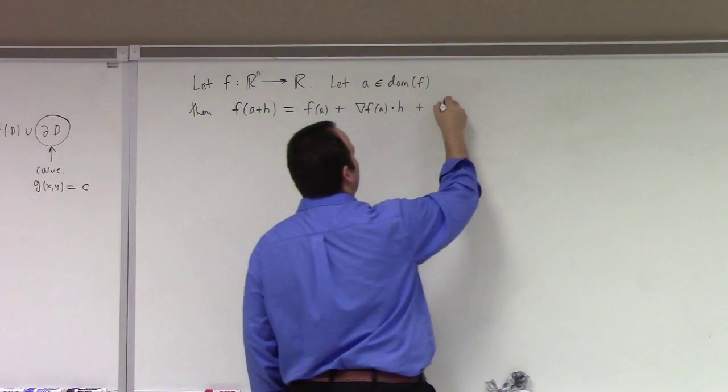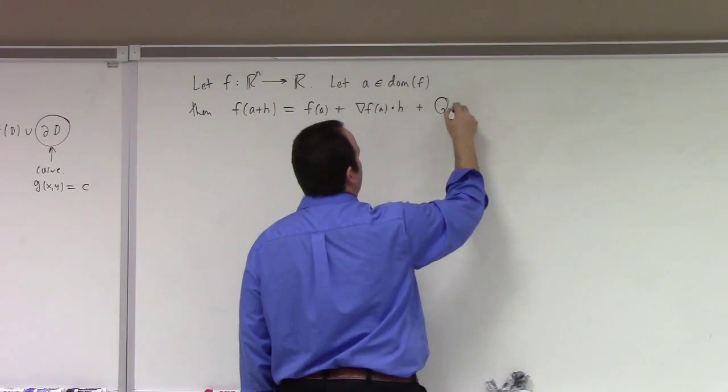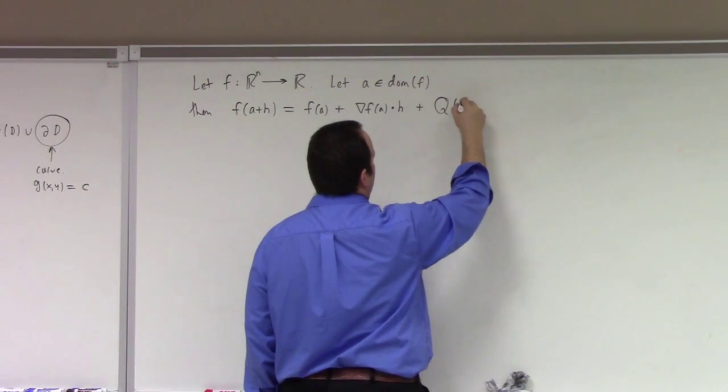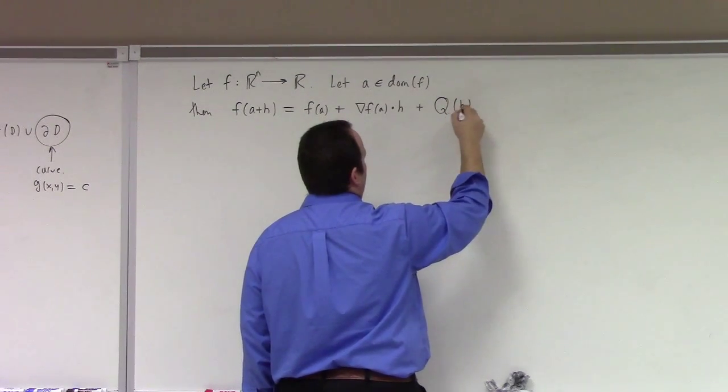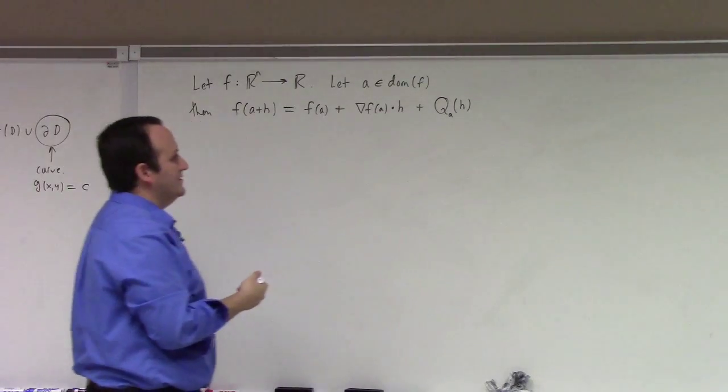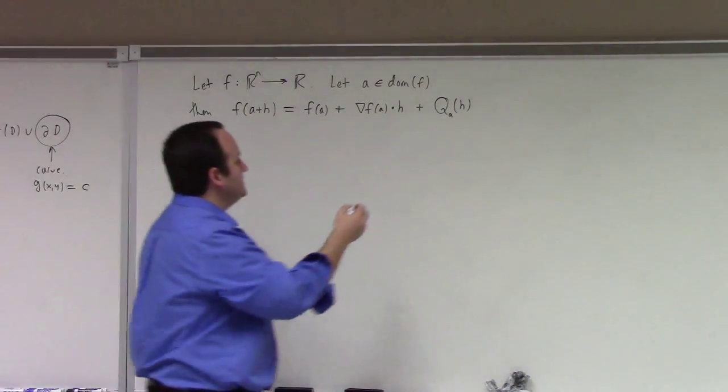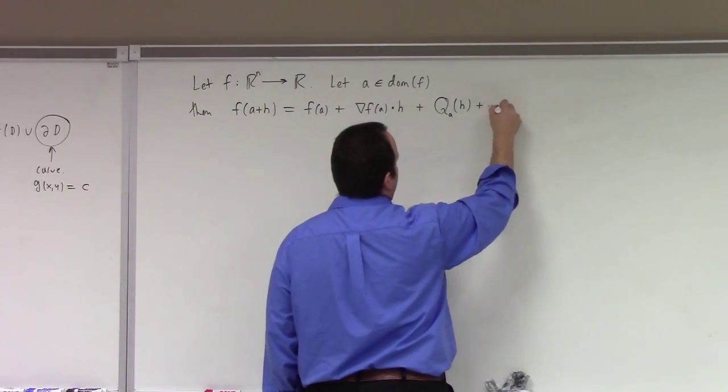The next thing is what's called the Hessian, so I'll use a Q. Technically at the point A, but I'll just say Q of H. Fine, if you want me to, I can put a little sub A on it to indicate it is at the point A. That's the next piece, the Hessian. And then stuff, yeah.